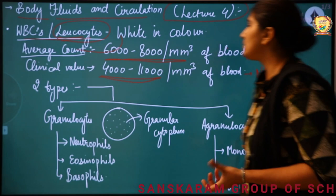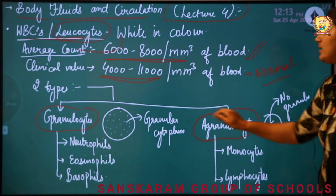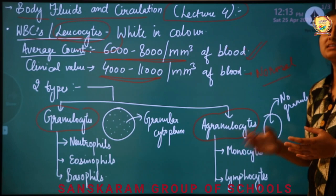Now, talking about the types of WBCs. They are of two types: granulocytes and agranulocytes. These are basically divided into two categories — first is granulocytes and second is agranulocytes.